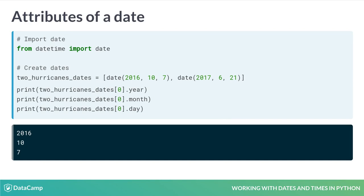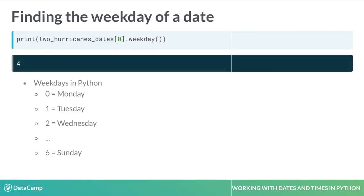You can access individual components of a date using the date's attributes. You can access the year of the date using the year attribute, and the result is 2016. Similarly, you can access the month and day using the month and day attributes. You can also ask Python to do more complicated work. Here, we call the weekday method on a date and see that the weekday is four. Python counts weekdays from zero, starting on Monday — one is Tuesday, two is Wednesday, and so on, up to six being a Sunday. This date was a Friday.